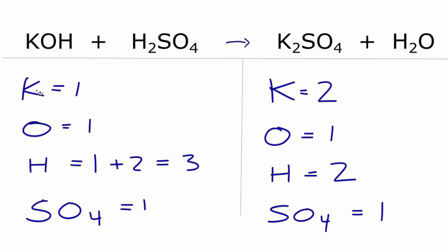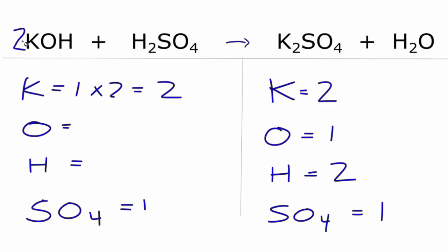Let's fix our potassiums first. I could just put a 2 in front of the KOH, so 1 times 2 gives me two potassiums. Then I need to update my oxygen and hydrogen atoms. I have 1 times 2 for the oxygen, that gives me two oxygen atoms. For hydrogen, I have 1 times 2, so two hydrogens, plus these two hydrogens from H₂SO4 — I have four hydrogens total. Things are looking better.